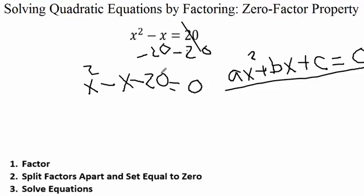After subtracting 20 from both sides, the right side becomes zero and the left side becomes x squared minus x minus 20. Now our equation is in proper form and we can go through our factoring steps. Step one: factor the polynomial. Scanning the terms — no greatest common factor for the numbers or variables. We have three terms with a leading coefficient of 1, so we'll use reverse FOIL.